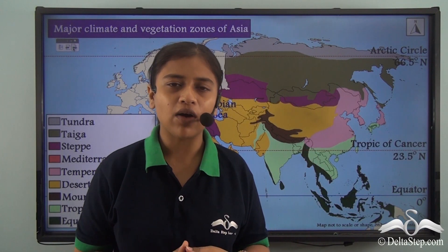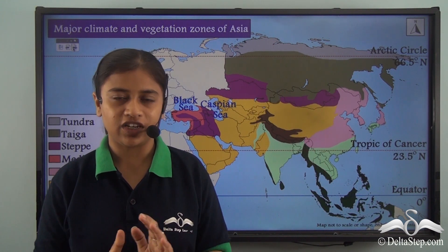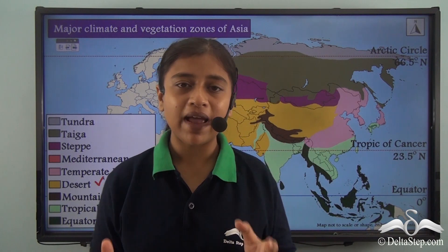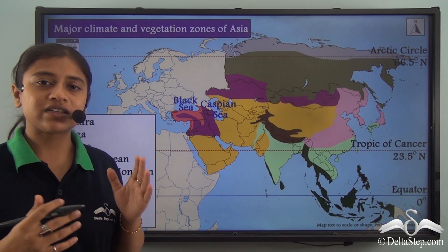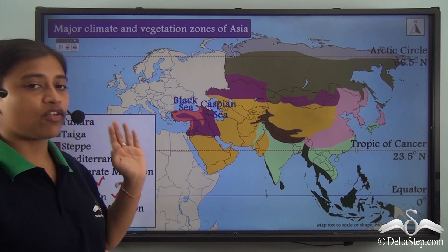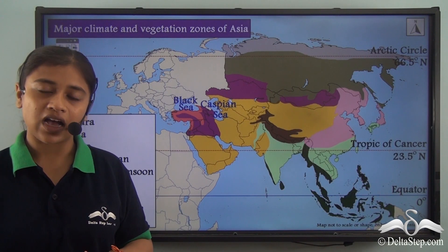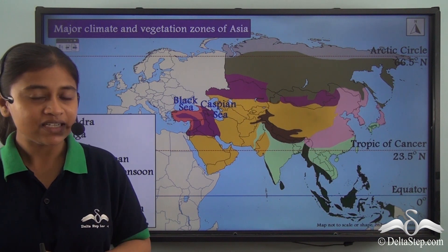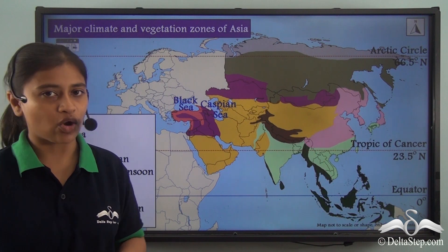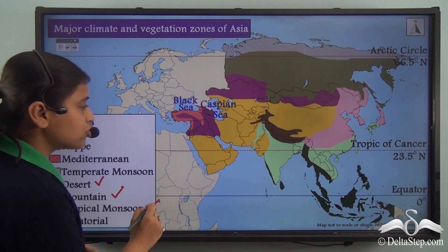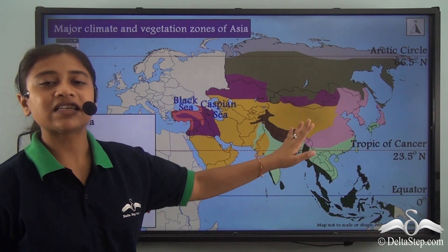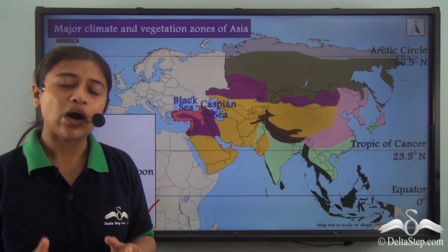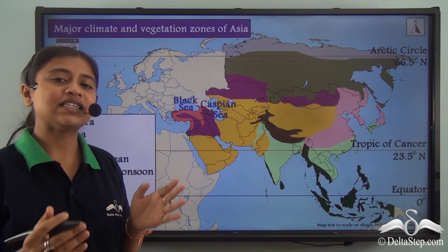In our previous lesson, we learnt about two of the major climate types of Asia, where we covered the mountain and the desert type of climate, their respective vegetation and wildlife. In this lesson, we will be concluding our discussion on the major climates of Asia by looking into the final two types: the tropical monsoon climate found in the southern and south-eastern part of the continent, and the equatorial type of climate around the equator in the extreme south-eastern part. So let's look at each of them as we proceed.